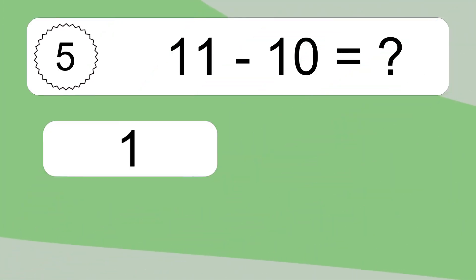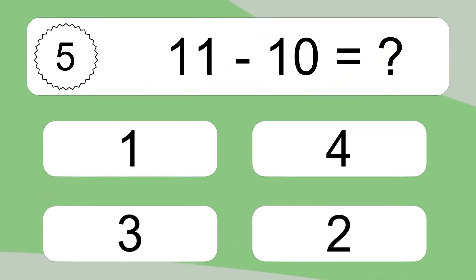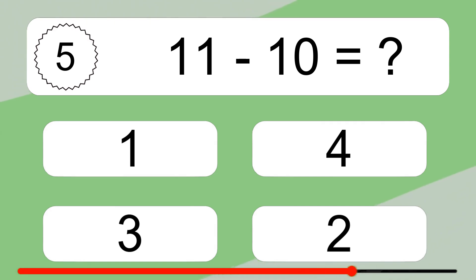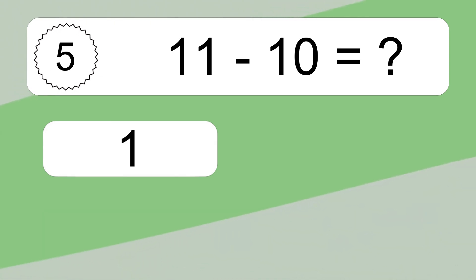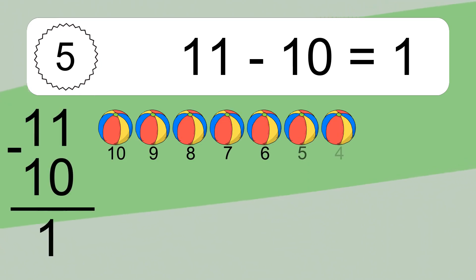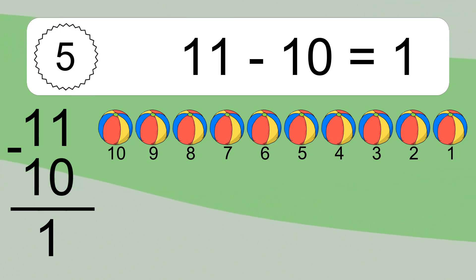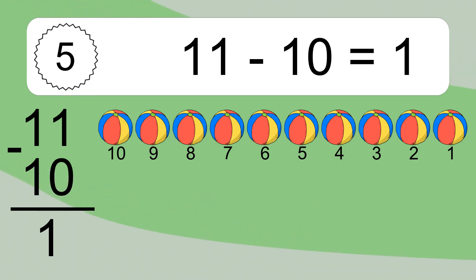11 minus 10 equals what? 11 minus 10 equals 1. Let's count it: 10, 9, 8, 7, 6, 5, 4, 3, 2, 1.